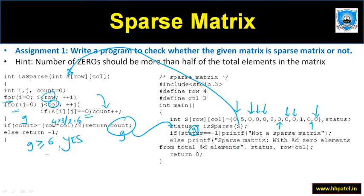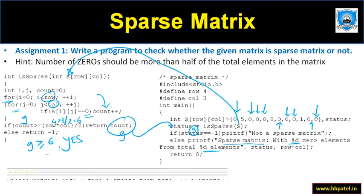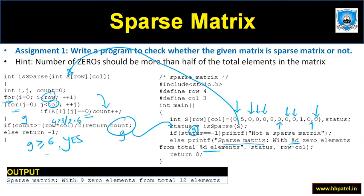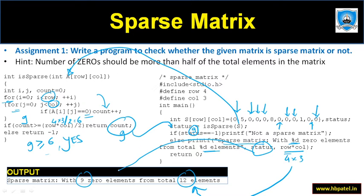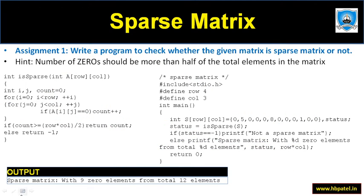So it will print: 'sparse matrix with nine zero elements from total 12 elements' — total 12 means rows times columns, which is 4 × 3. The status equal to nine gets printed. This program checks whether the matrix is sparse or not.